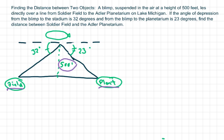If the angle of depression from the blimp to the stadium is 32 degrees. So remember angle of depression means you're looking down. It's 32 degrees and from the planetarium is 23 degrees. That's angle of depression here. So basically they want to know what this length is here.